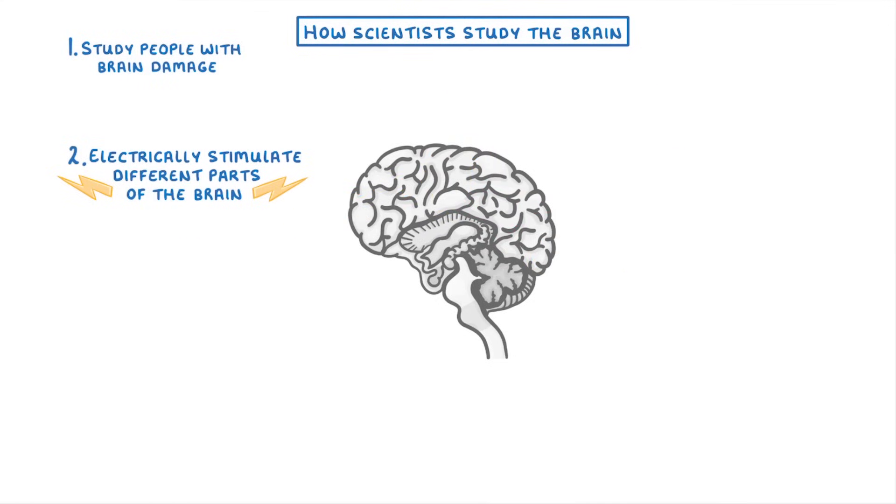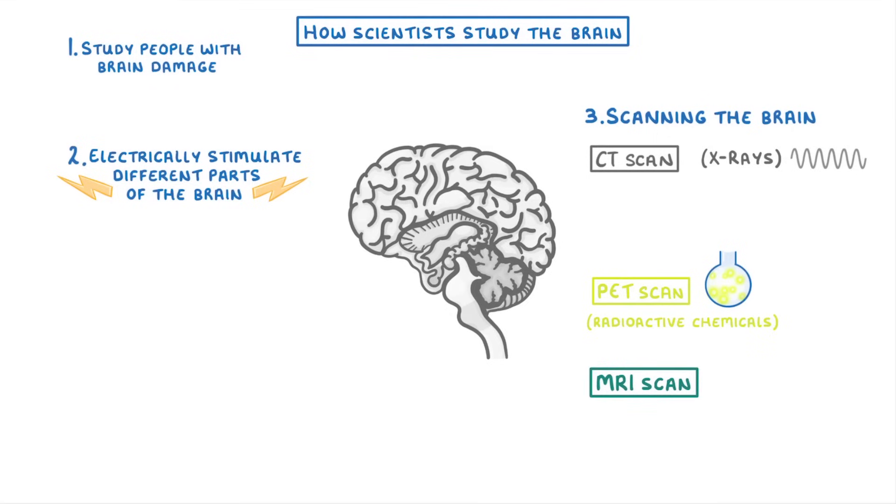A less invasive technique, and the one most used today, is scanning the brain. This can involve a bunch of different forms, including CT scans, which use x-rays, PET scans, which use radioactive chemicals, and MRI scans, which use really strong magnetic fields.